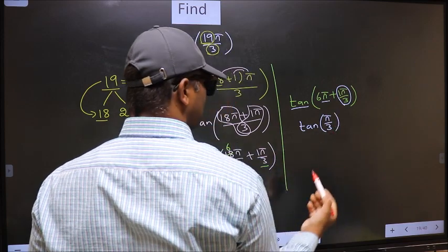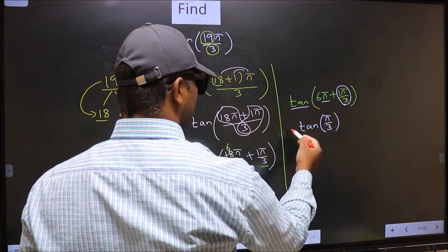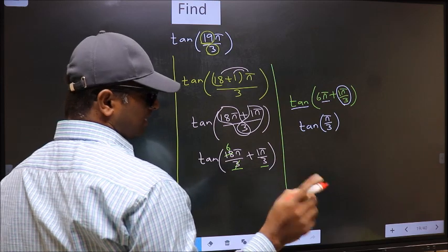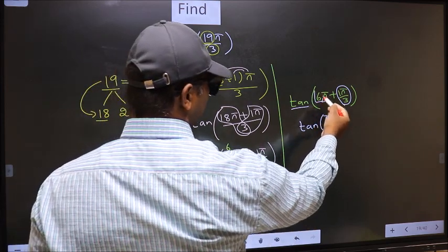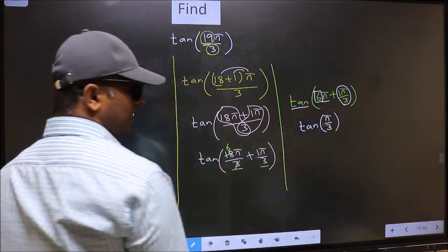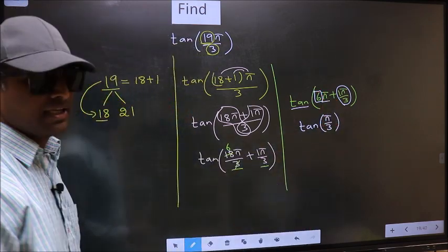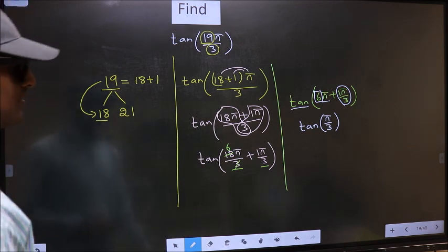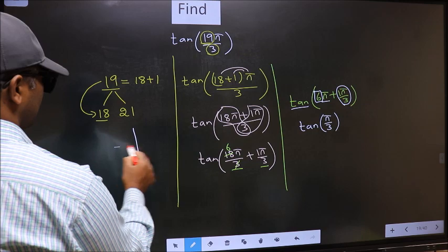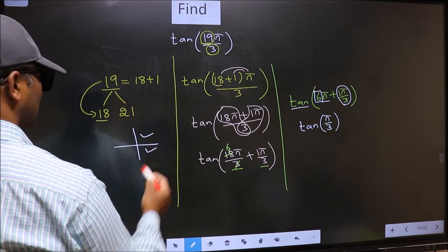The question is, will we get plus or minus? To answer that, we should look at the number before π, which is 6. 6 is even, and all even multiples of π lie in either the first or fourth quadrant.